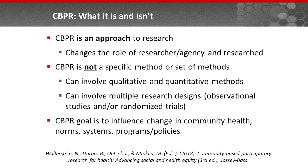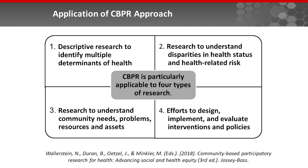CBPR is not a specific method or set of methods. It can involve both qualitative and quantitative methods, and can have multiple research designs — including randomized trials, observational studies, or studies that involve therapeutics. The goal of CBPR is to work across levels to change health and healthcare systems and policies that influence health. CBPR is applicable to four types of research: descriptive research to identify multiple determinants of health; research to understand disparities in health status and health-related risk; research to understand community needs, problems, resources, and assets; and efforts to design, implement, and evaluate interventions and policies.